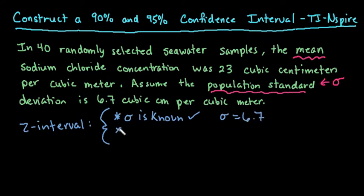The second one is that we have to have a random sample. And so for this one it does tell us in here that they randomly selected seawater samples.